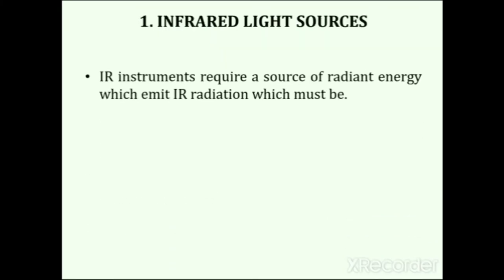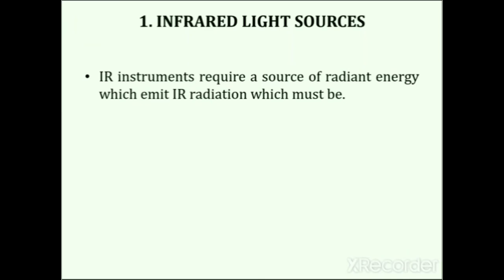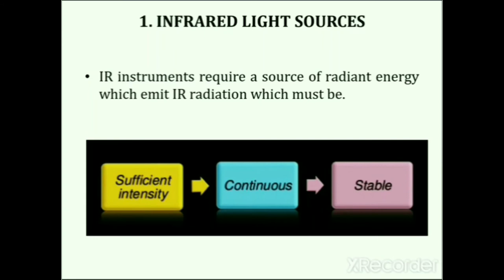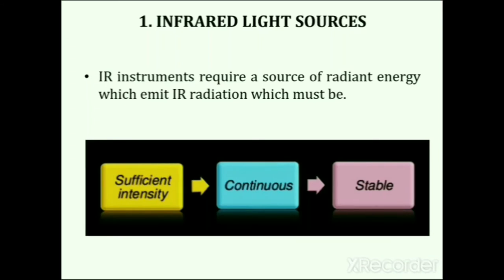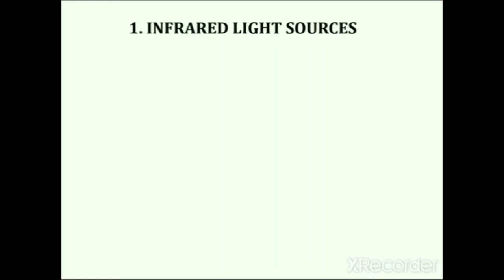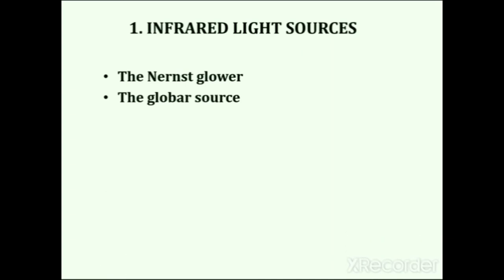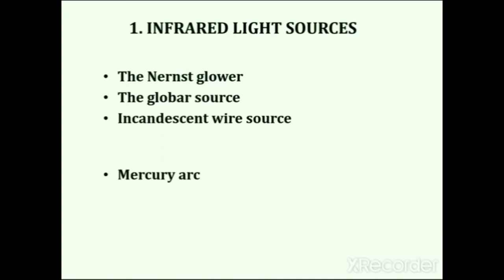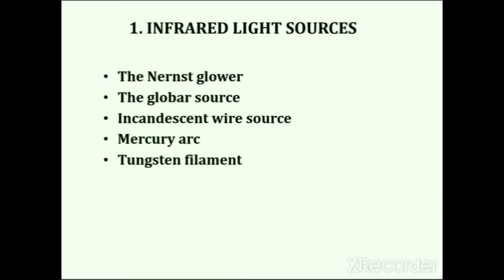An infrared instrument requires a source of radiant energy that emits IR radiation. A good light source must produce desired radiation with sufficient intensity, emit continuous radiation, and remain stable over a long period of time. Different types of light sources used include the Nernst glower, the Globar source, incandescent wire source, mercury arc, tungsten filament and CO₂ laser source.